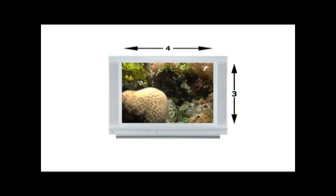Standard definition television is the term we use to explain what we're used to - the old analog television that's very square. That square is a 4 by 3 ratio, that's 4 units wide by 3 units tall.